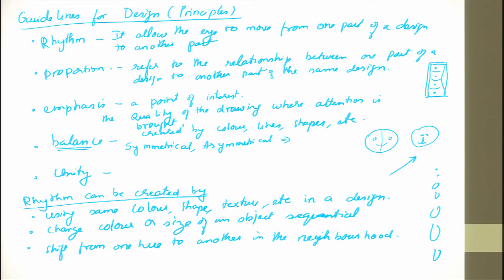Unity means lines and shapes are repeated, and we use the same style and color all along the drawing. That is unity. These are the guidelines and basic elements for design.